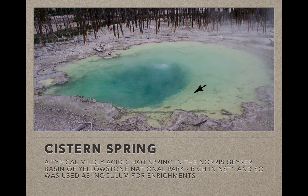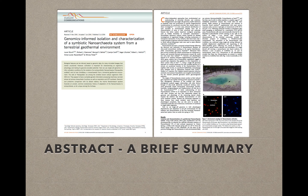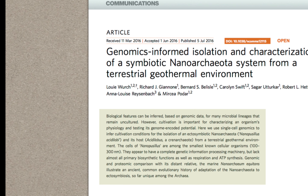This is Cistern Spring — from the paper under discussion today. It's a mildly acidic hot spring in the Norris Geyser Basin. In metagenomics analysis, they knew that this spring was very rich in nanoarchaeal-like sequences, and so they decided to use that for inoculum for their enrichment cultures. Let's jump into the paper itself — here's the abstract.